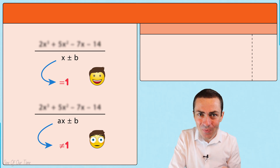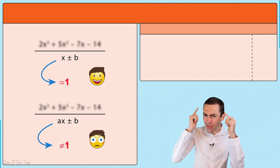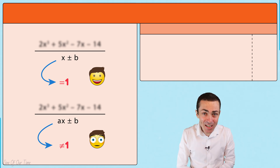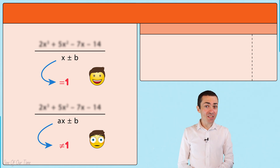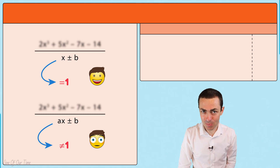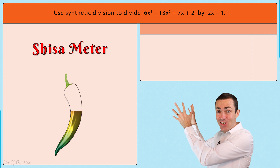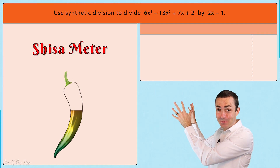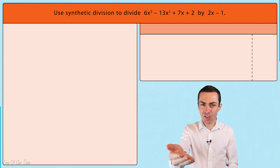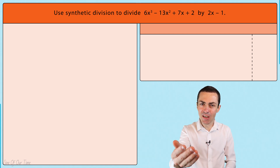Since synthetic division is not designed to work with this kind of divisor, but that doesn't mean it can't be done. With a little bit of manipulation and a few extra things to remember, synthetic division can still work when a divisor is of the form ax plus or minus b — but it does register pretty high on the difficulty meter. Let's consider this polynomial division where 6x³ minus 13x² plus 7x plus 2 needs to be divided by 2x minus 1.